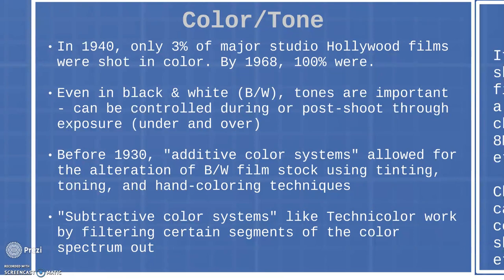Subtractive color systems started to be developed after the 1930s, into the 1940s and 50s — things like Technicolor, where you filter out certain segments of the color spectrum and then add those strips of film back together to build the color back up. So additive color systems add color after the fact through tinting, toning, and hand coloring, while subtractive color systems subtract color by using a film stock that filters out certain parts of the color wheel and then layers those strips together, like Technicolor does.